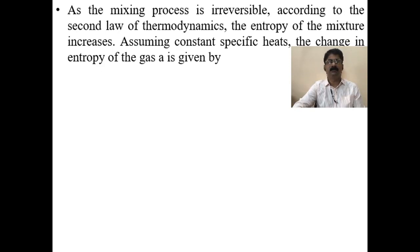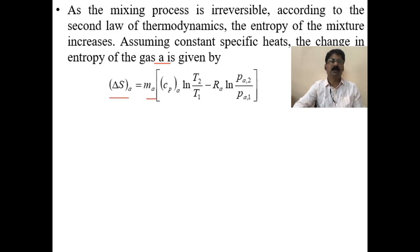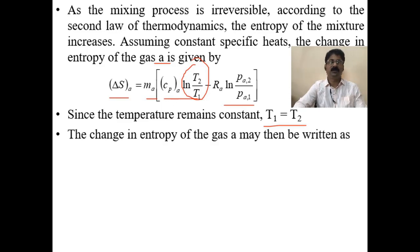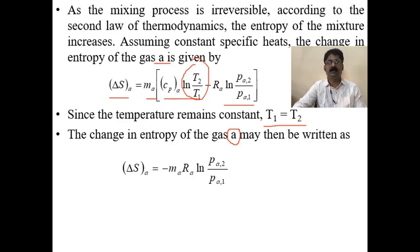Since the mixing process is irreversible, according to the second law of thermodynamics the entropy of the mixture increases. Assuming constant specific heats, the change in entropy of gas A is: ΔsA = mA [cpA · ln(T2/T1) − rA · ln(pA2/pA1)]. Since it is an isothermal process, T1 = T2, so ln(T2/T1) = 0 and the first term cancels. Thus ΔsA = −mA · rA · ln(pA2/pA1), where pA1 is the initial pressure and pA2 is the partial pressure of gas A in the mixture.